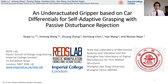Hello everyone. My name is Jinghong Wong from Imperial College London, and welcome to my presentation on our paper titled: An underactuated gripper based on car differentials for self-adaptive grasping with passive disturbance rejection.